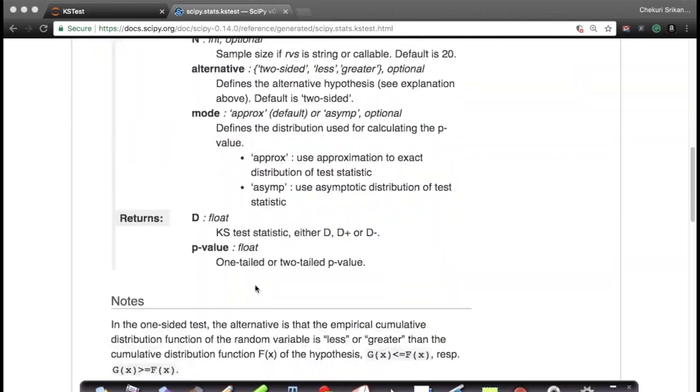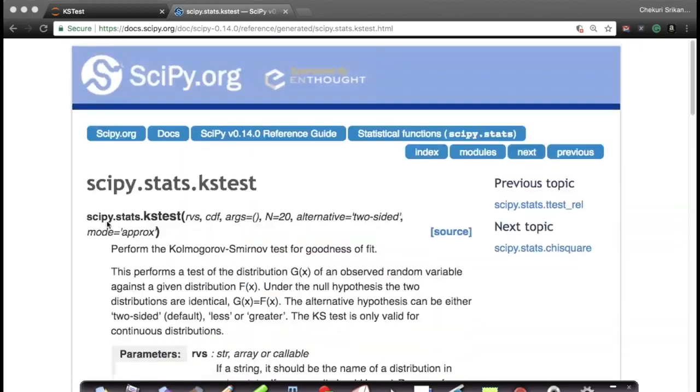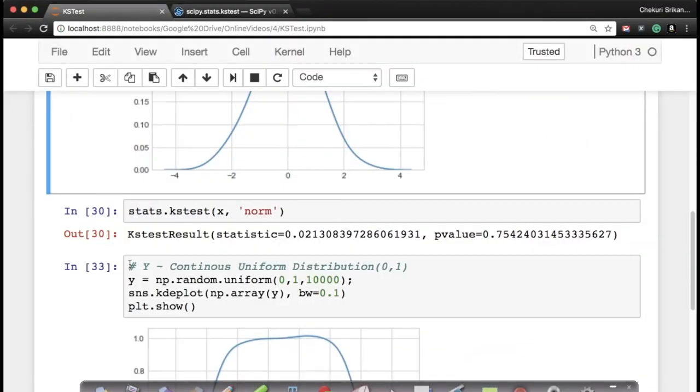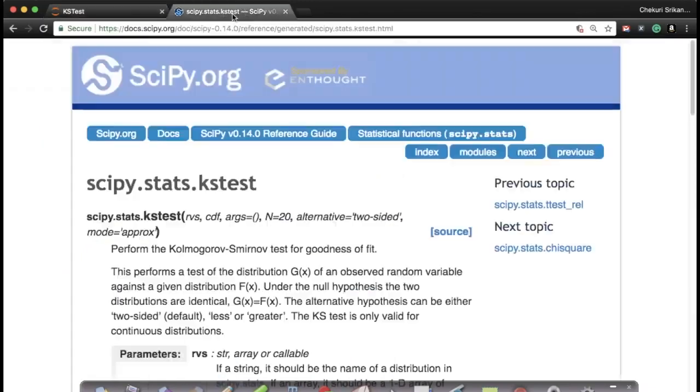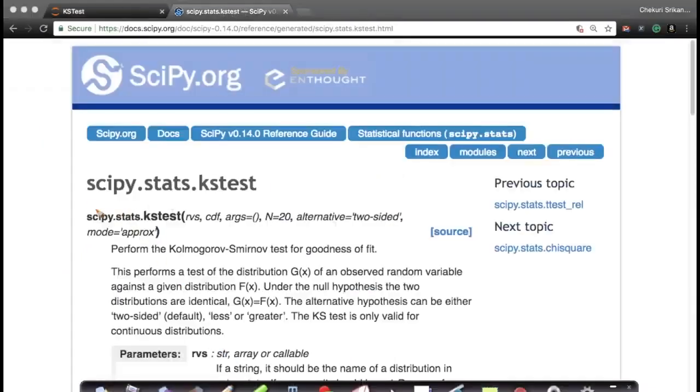Having said that, now, it returns you two values. It returns you the KS test statistic, which is your value D, and the P value. So, for every function that I introduce in my code, I strongly recommend you go and check out its documentation. You just need to Google it, and then you get extensive documentation of what it does.